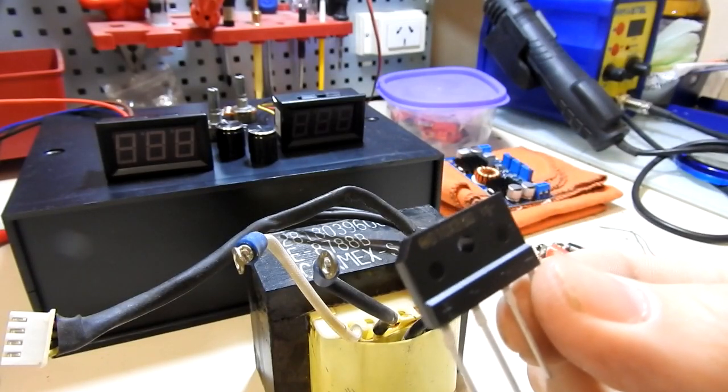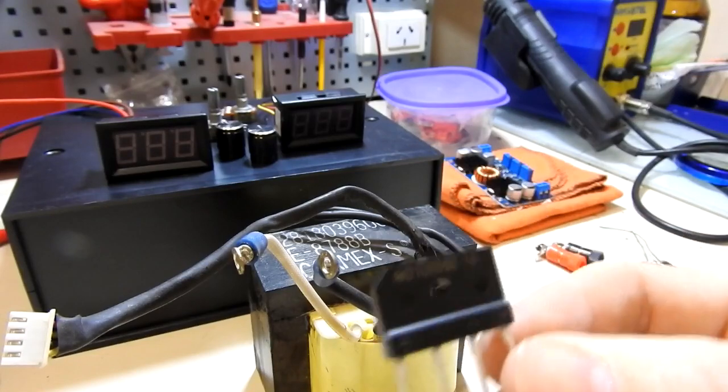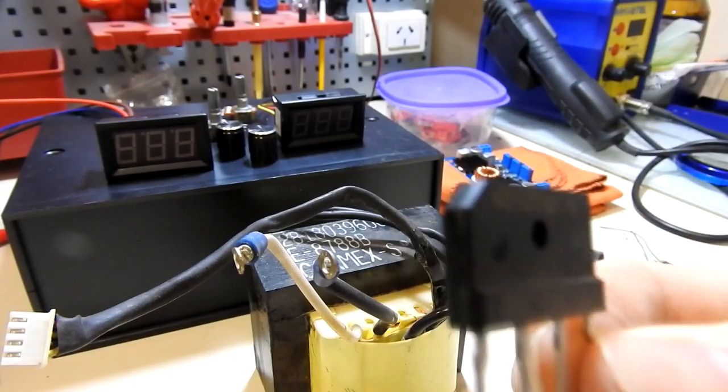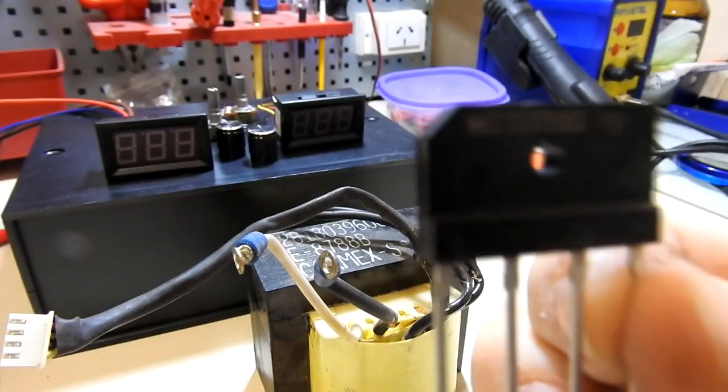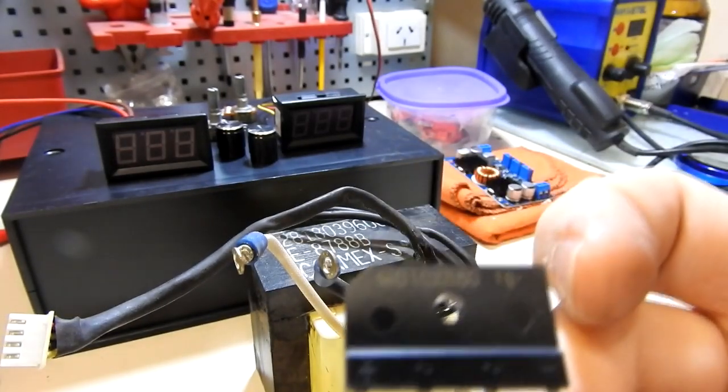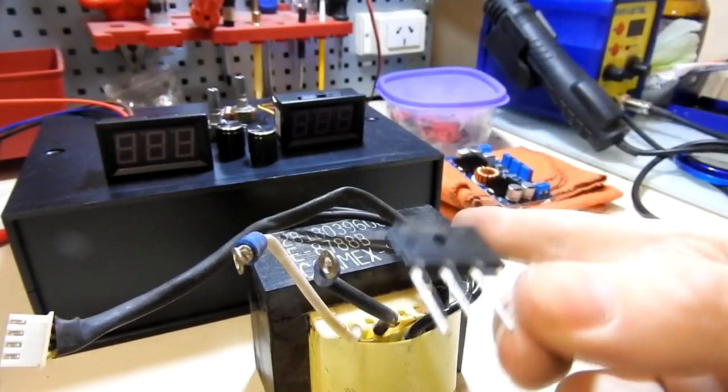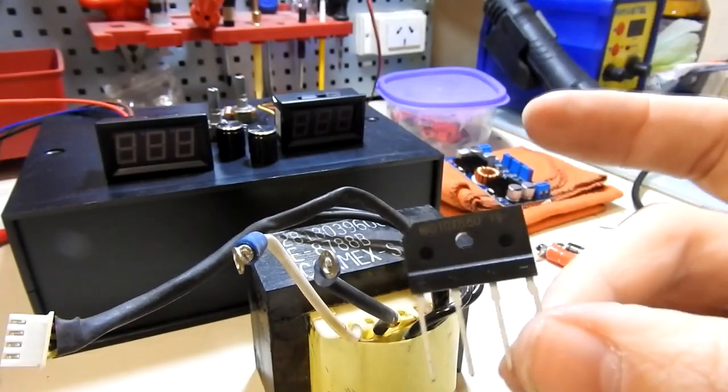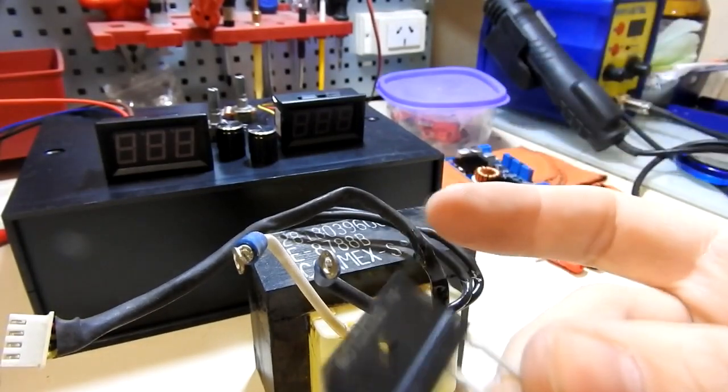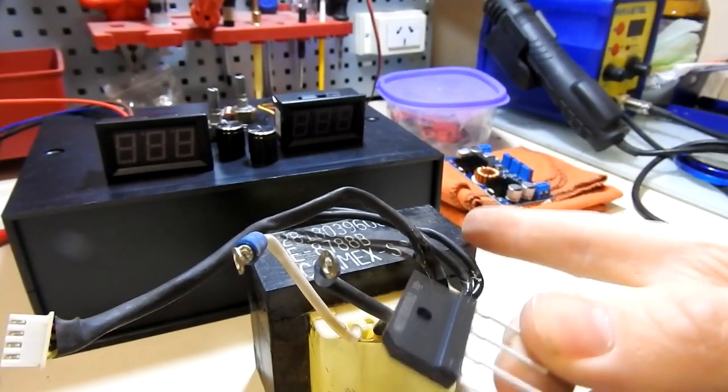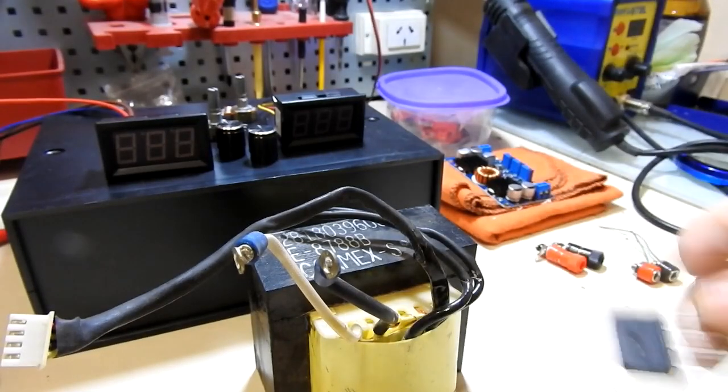Acá tenemos uno bastante cojonudo. Yo sinceramente no sé cuántos amperes, me tendría que fijar en el datasheet, pero compré uno bastante grande. Calculo que esto para esto va bien. Vamos a suponer que va bien cojonudo. Si esto tira 3-4 amperes y esto se banca 6-7-8 amperes, tal vez 10, no sé. Esto está sobredimensionado para lo que vamos a hacer con esto. Esto creo que se la banca.